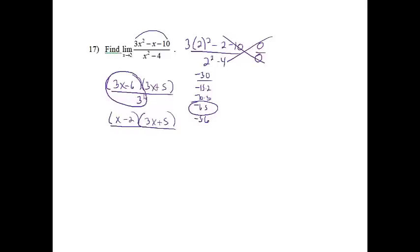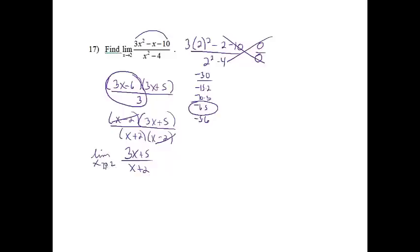In the denominator, that's a difference of squares, which factors as x plus 2 times x minus 2. The x minus 2 factors cancel, leaving 3x plus 5 over x plus 2. Now I can plug in x equals 2: that gives 3 times 2 plus 5 over 2 plus 2, which is 11 over 4. So the limit is 11 over 4.